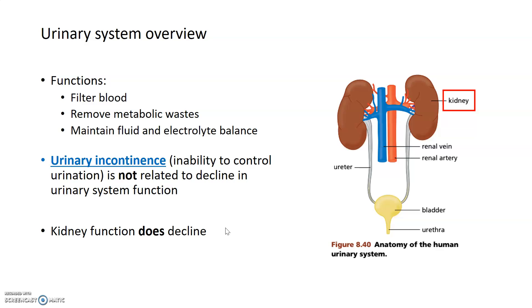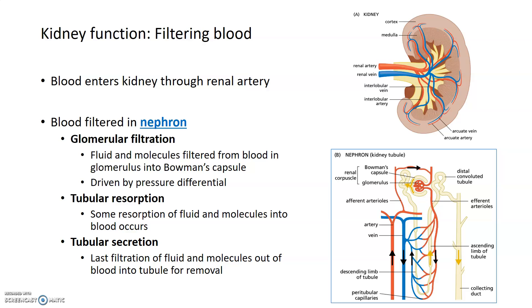One thing that does change over time in the urinary system is kidney function. The kidney's main function is to filter blood. In a longitudinal cross-section of a kidney, you can see an artery that supplies blood and a renal vein where filtered blood leaves. Blood comes in through the renal artery, gets filtered in small units called nephrons, and then the filtered blood leaves through the renal vein.